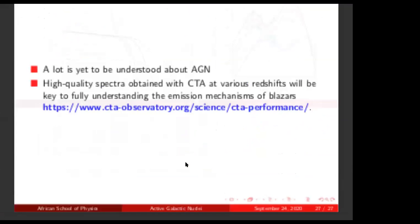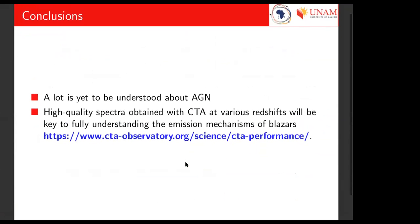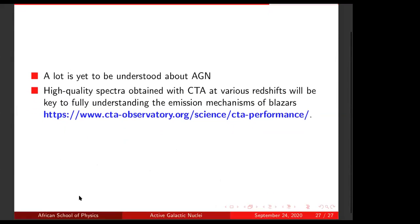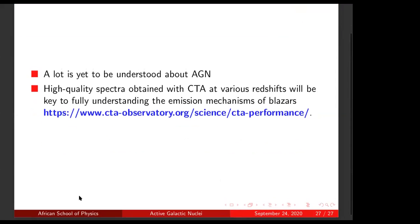To conclude and summarize: a lot is yet to be understood about AGN, as we've seen from the lectures. High-quality spectra that CTA will give us at various redshifts would be key for us to unravel the current mysteries of blazer emission mechanisms. And that's the end of the lecture — happy to start discussions now.